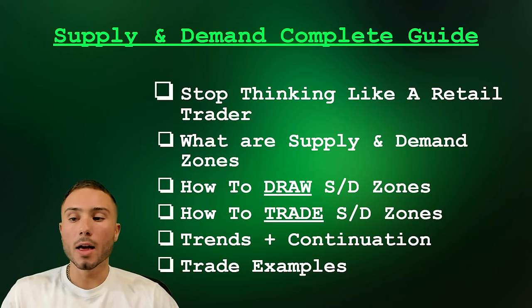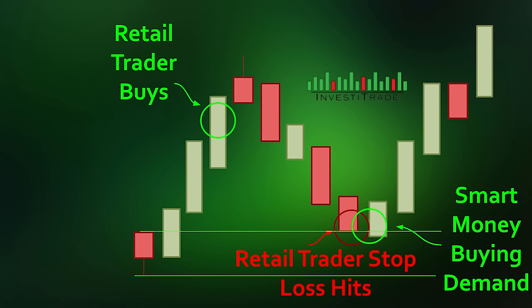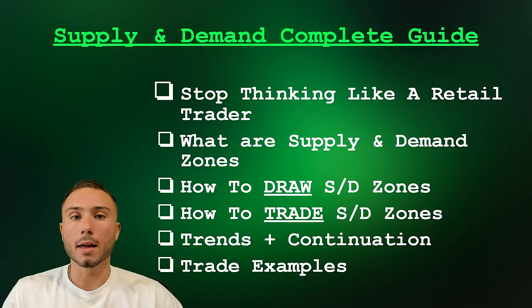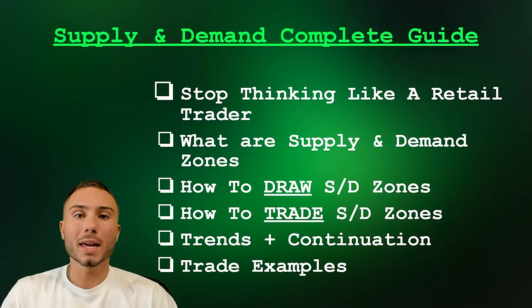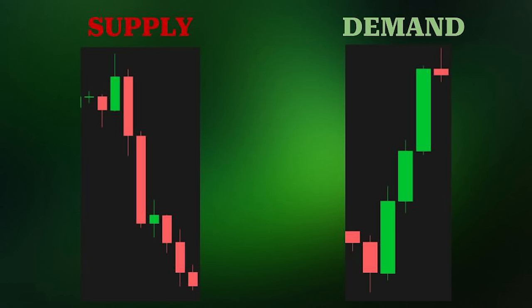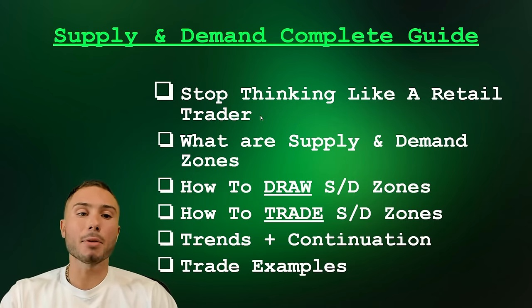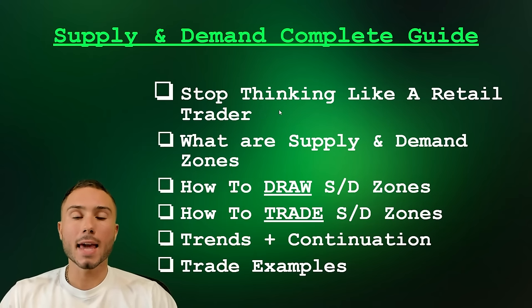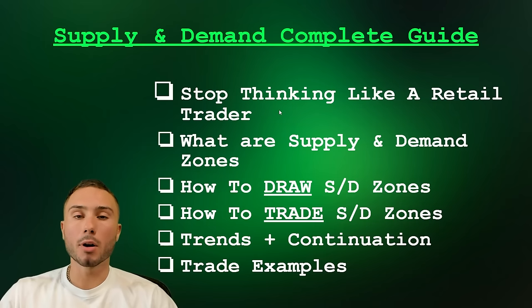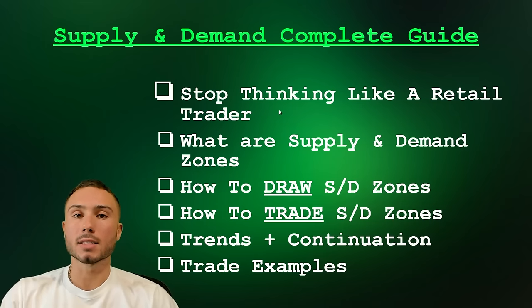Why 90% of traders fail is because they're buying when they should be selling, and they're selling when they should be buying. Trading with supply and demand and following the paths of smart money, we can capitalize on bigger moves. This is a complete guide on how to stop thinking like a retail trader, getting our mindset away from a normal retail trader, and putting ourselves in the position of smart money — buying at lower prices and selling at higher prices.